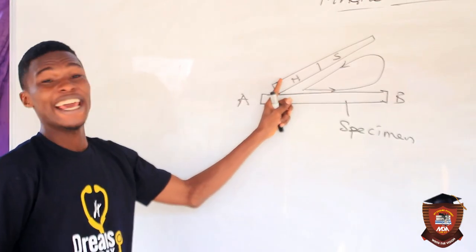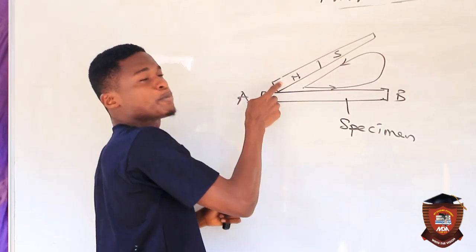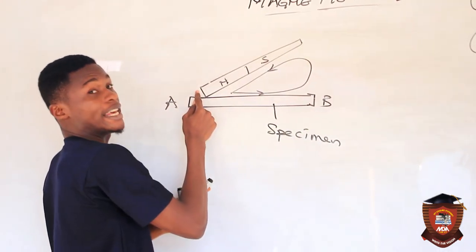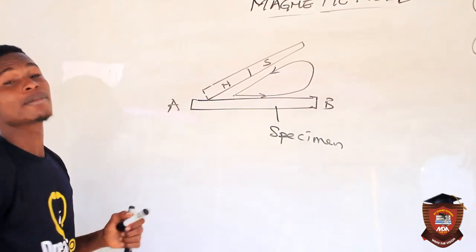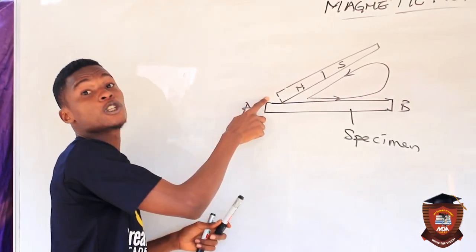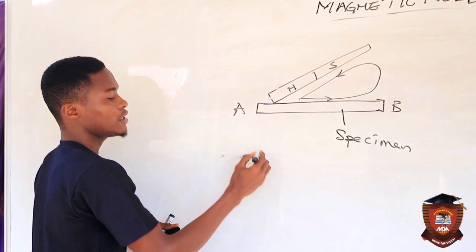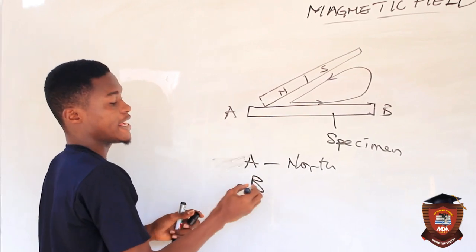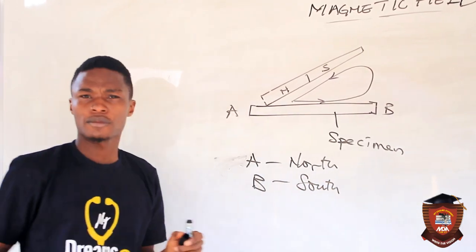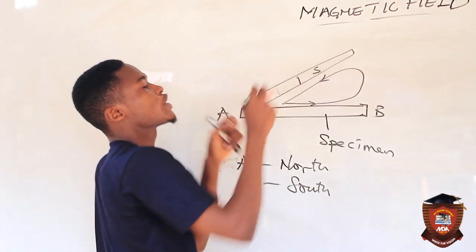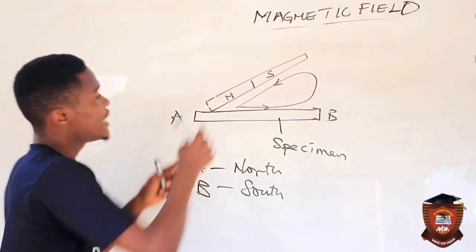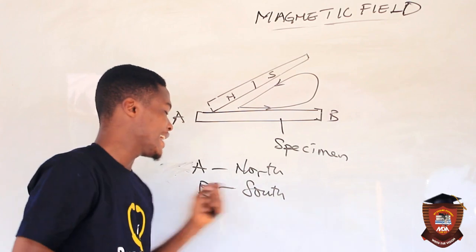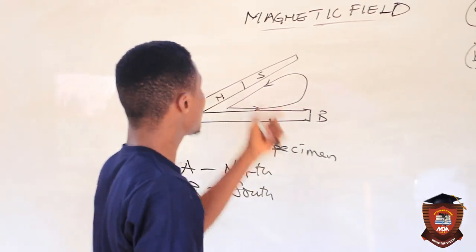After stroking, we need to identify the polarities. If I am stroking with a north pole from end A down to end B, the end A will gain a north polarity and end B will gain a south polarity. If I stroke with a south pole instead, the opposite happens: end A gains south and end B gains north.